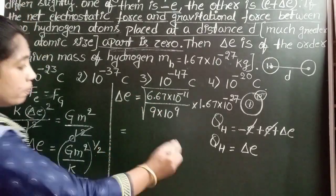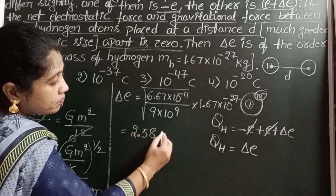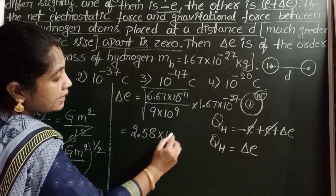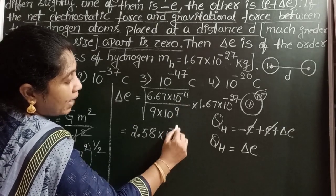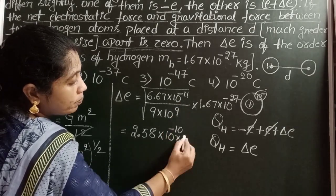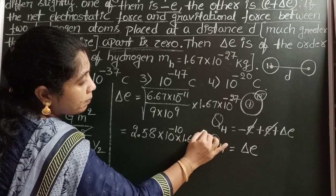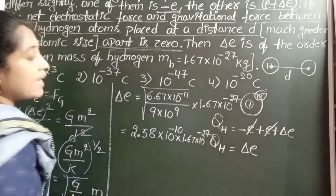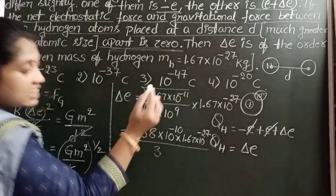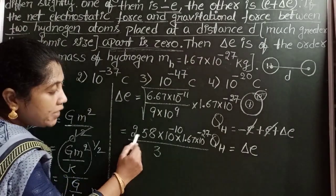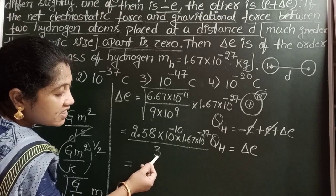This 10 power 9 goes to numerator, totally this value becomes 10 power minus 20. Square root of 6.67 into 10 power minus 27 by square root of 9 becomes 3. Multiply 2.58 into 1.67 and divide with 3.